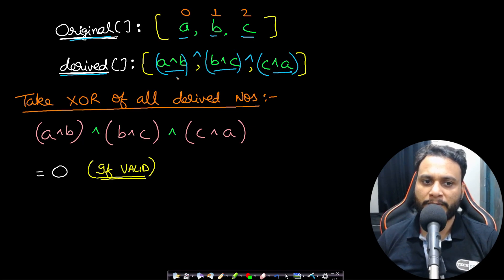So if you take the XOR between all the elements of the derived array, then you will find that a is occurring two times, b is occurring two times, and also c is occurring two times. So each of the elements will occur two times, and we know that in XOR, if you take a XOR a it will be 0.